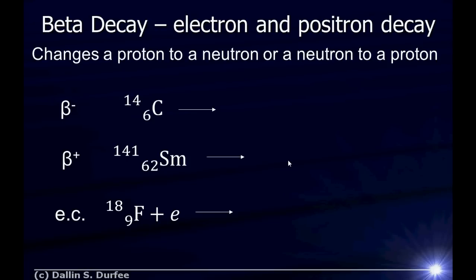In beta minus decay, I have some nucleus — say, carbon-14. It can go to a lower energy, more tightly bound, more stable state by changing one of its neutrons into a proton. To change a neutron into a proton is adding positive charge, so we have to get rid of some negative charge to make up for that. Spontaneously, a neutron becomes a proton plus an electron. So we go from carbon-14 to nitrogen-14. The number of nucleons doesn't change because we've just converted one neutron to one proton, so we become a new element. In order to conserve charge, if I make a new positive charge, I have to make a negative charge, so an electron comes out as well.